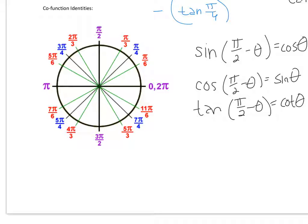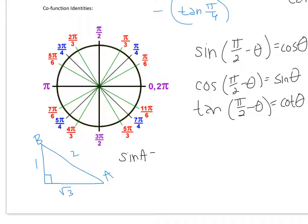Do you notice that when we're in a right triangle — let's draw a basic one. If this is angle A and angle B, I'll do a 2, 1, root 3 triangle. If we do the sine of A, that's 1 half. This is a 30-degree angle, so the sine of a 30-degree angle is 1 half.